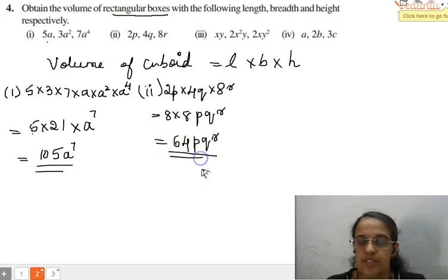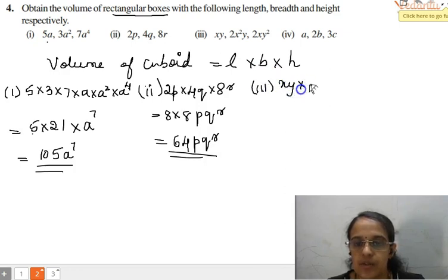Now coming to the third part of the question. It is XY into 2X square Y into 2XY square. So here when we multiply the numbers, 1 times 2 is 2, 2 times 2 is 4. Here the variables are X and Y.